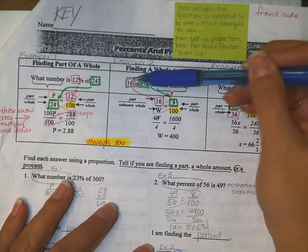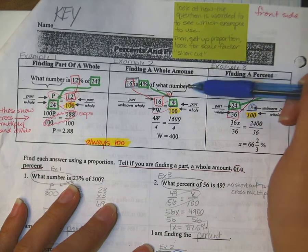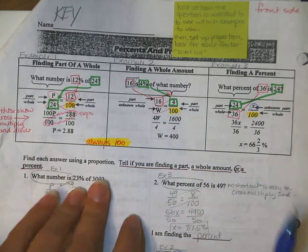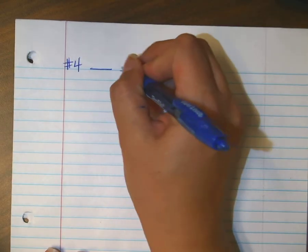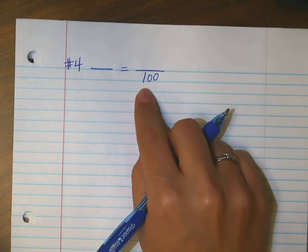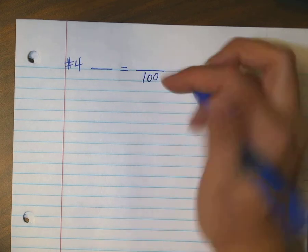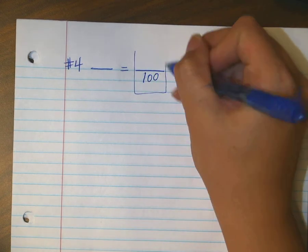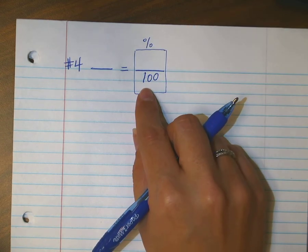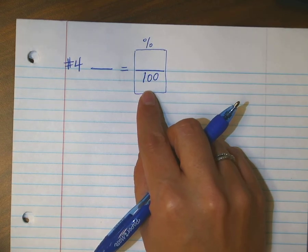Ours says 18 is 72% of what number? And here's my example. Please tell me, what do I know about every proportion? What about 100? Thank you. It's always the bottom right because this second ratio is going to be my percent stuff. That's my percent information and I know that percents are out of 100. And if you're not writing this down, you should.